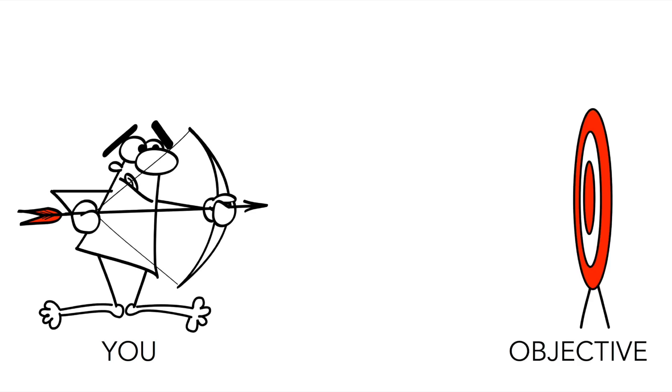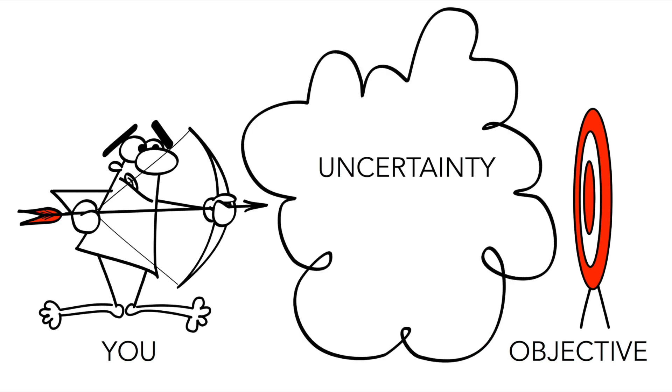Imagine this is you here on the left and let's pretend that your objective is to get a bullseye on the target way over here on the right. So we could visualize uncertainty as everything that lies between you and your objective.